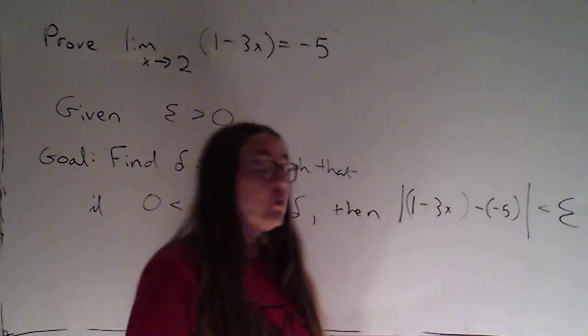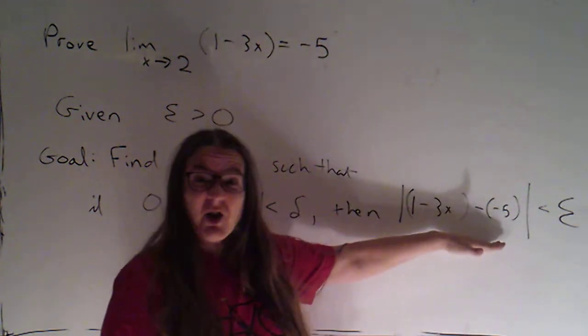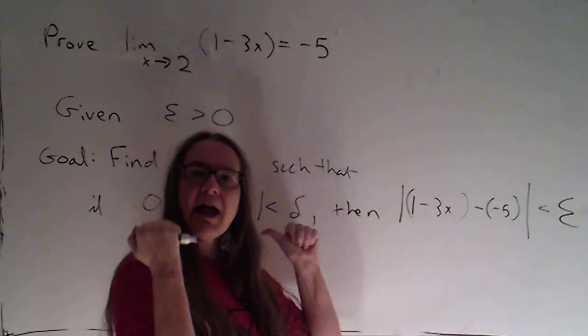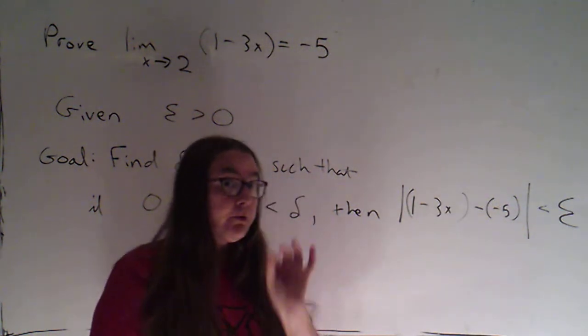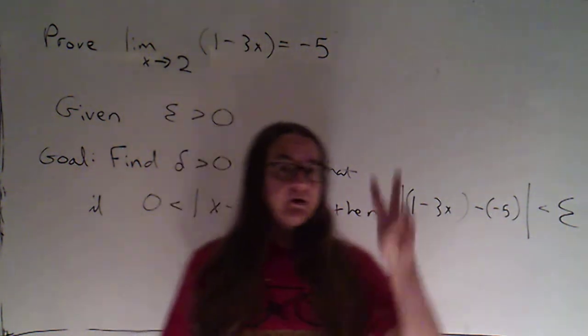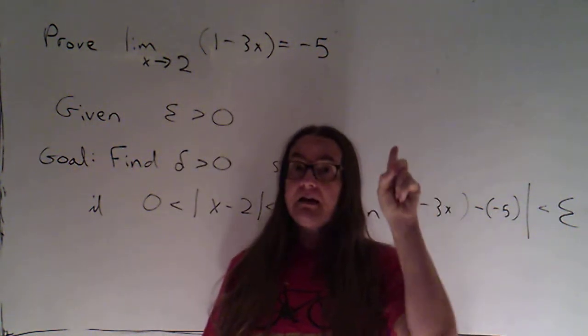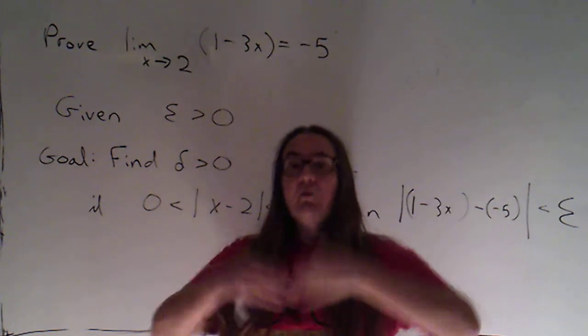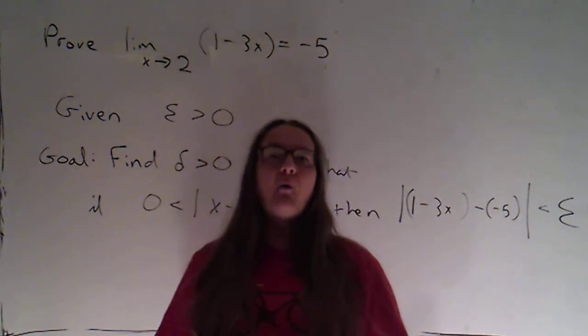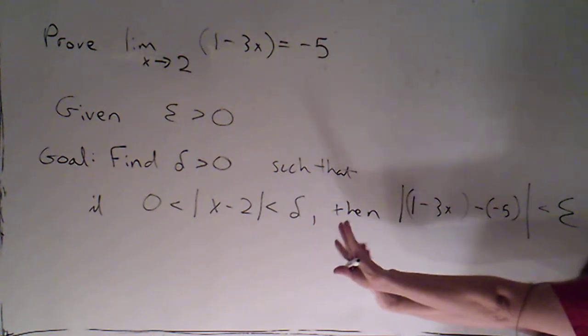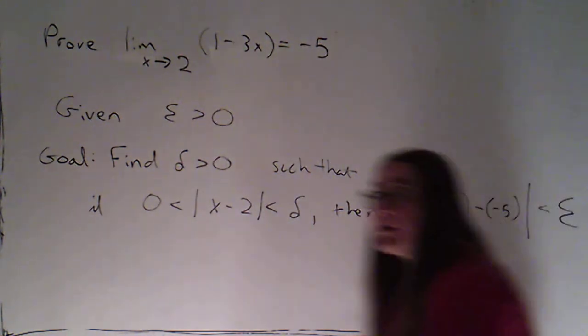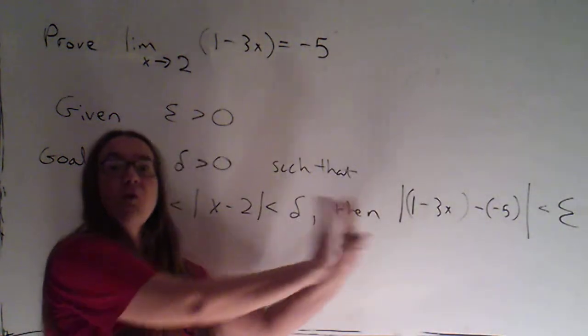So my informal work, I'm going to start with this, and I'm going to work backwards. So if I ask you to write a formal proof, I'm going to be looking for two things. I'm going to look for the informal work, which is how you figure out what delta is going to work. And for that, you're generally going to start here and work backwards. But then I'm going to ask for the formal proof where you go in the right direction.